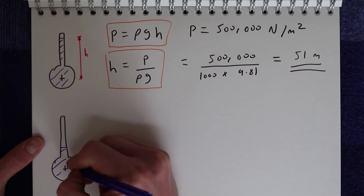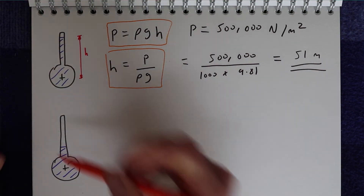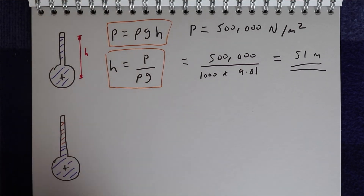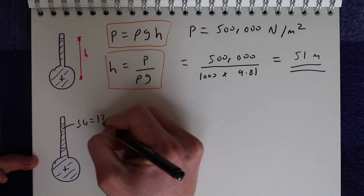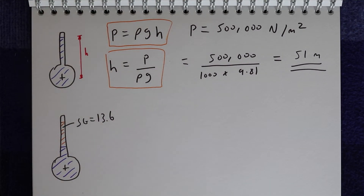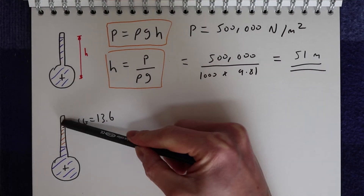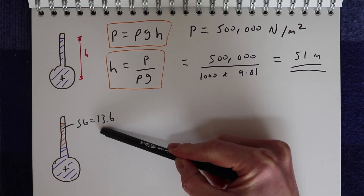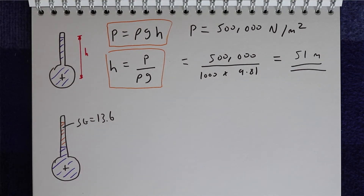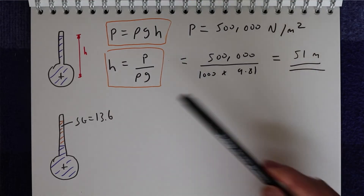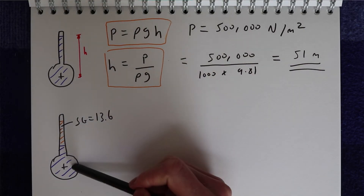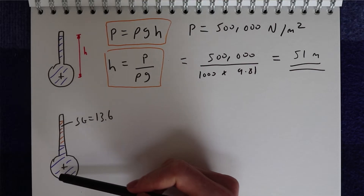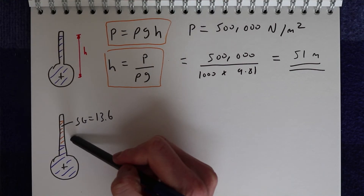So if we replace some of that water with a fluid with a much higher density, the higher that density the lower our H is going to be. So if we replace it with something like mercury that has a specific gravity of 13.6, which means it's 13.6 times more dense than water, the height of that fluid in our gauge is going to be 13.6 times less than if it was just water. So we're going from a piezometer that's maybe 51 metres high to something just a few metres high. However, if we turn off the pipe and the pressure goes to zero, the mercury will just fall down into the pipe and disappear with the water, so every time we turn the system off we lose our gauge fluid.